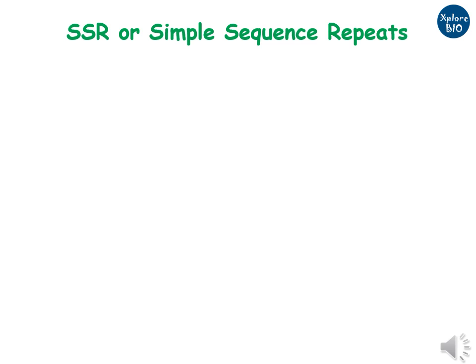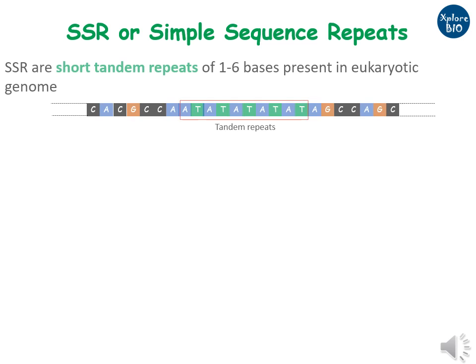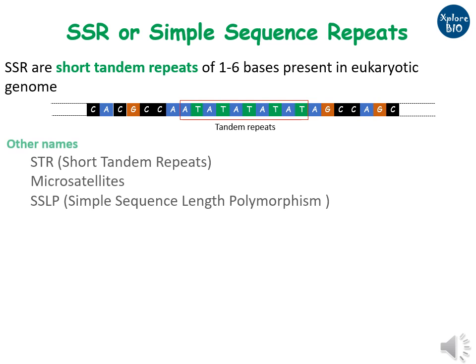SSR, or simple sequence repeats, are tandem or continuous repeats of 1 to 6 bases found in genomes of eukaryotes. SSRs are also known as STR (short tandem repeats), microsatellites, and SSLP.